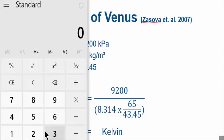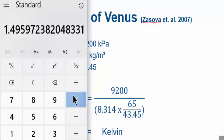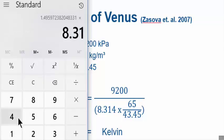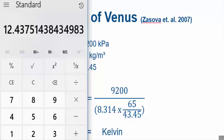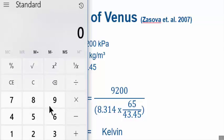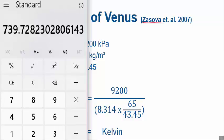Okay, we've got our calculator. 65 divided by 43.45 equals that, times by 8.314, okay, 12.437. 9200 divided by 12.437—this is the surface temperature of Venus in Kelvin: 739.7. 739.7—how accurate is that? Let me know.